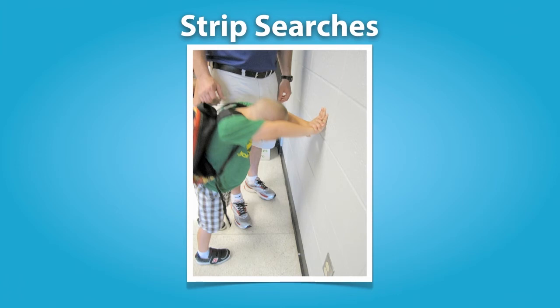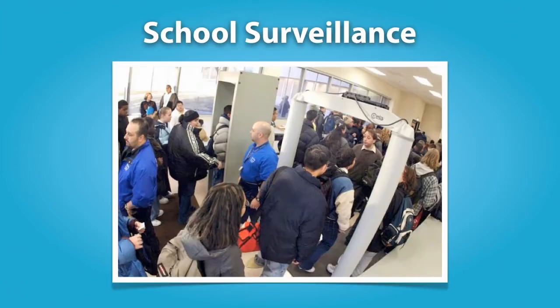Let's move to the second context where student privacy rights are most often implicated: surveillance. In light of the 1999 shooting at Columbine High School in Colorado and, more recently, the shooting at Sandy Hook Elementary School in Connecticut, schools have adopted stricter safety measures, including installation of metal detectors and surveillance cameras. These measures have all withstood constitutional challenges when school officials reasonably believe they are necessary for school safety. Several school districts have recently initiated programs requiring students to wear RFID-enabled identity tags while at school, and there is current litigation pending seeking to invalidate such a rule in Texas on the grounds that the requirement constitutes an invasion of the student's privacy.